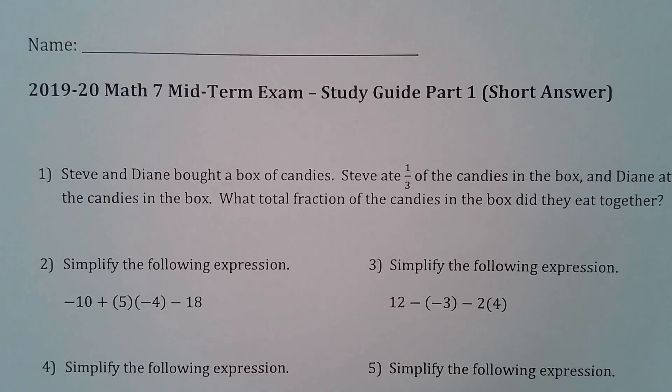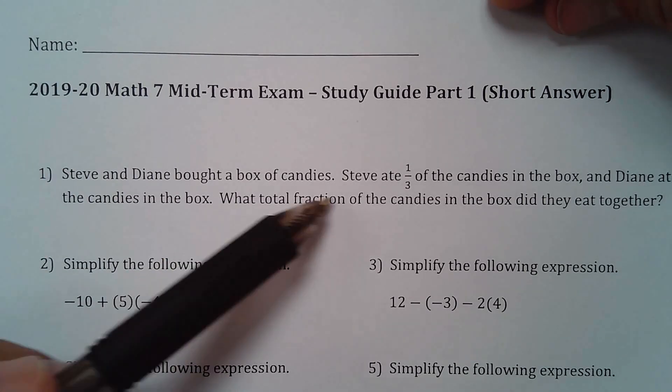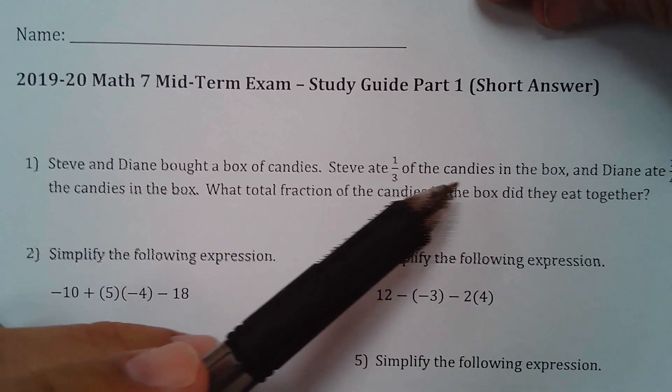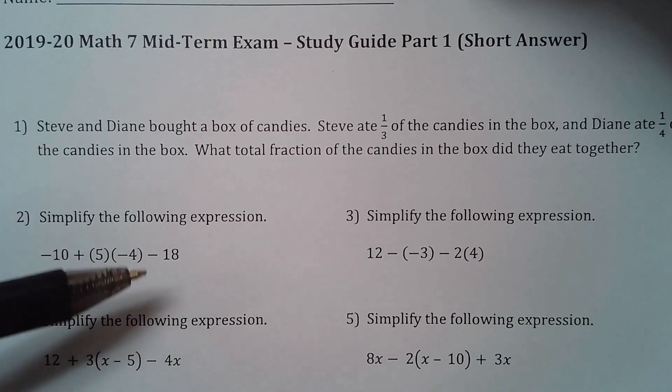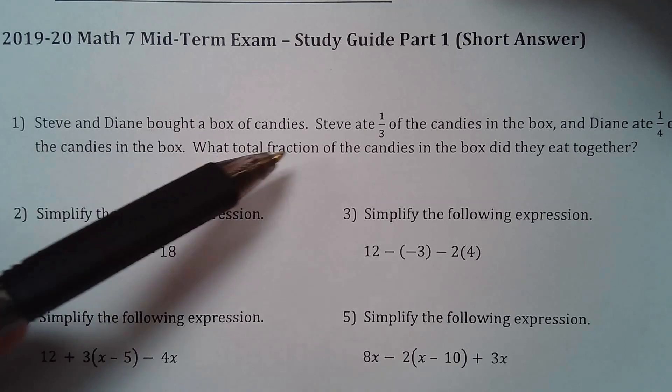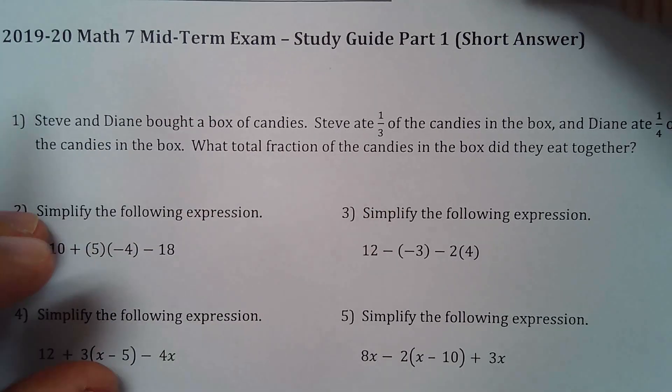Hi and welcome to the study guide for Math 7 and the midterm study guide. I'll get started here. Number one, Steve and Diane bought a box of candies. Steve ate one-third of the candies in the box and Diane ate one-fourth of the candies in the box. What is the total fraction of candies that they eat together?